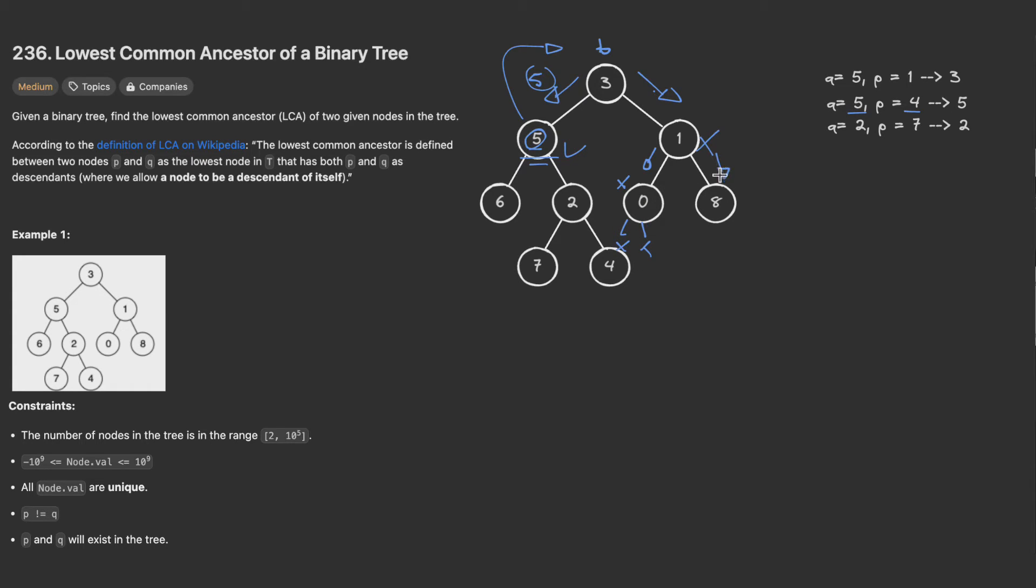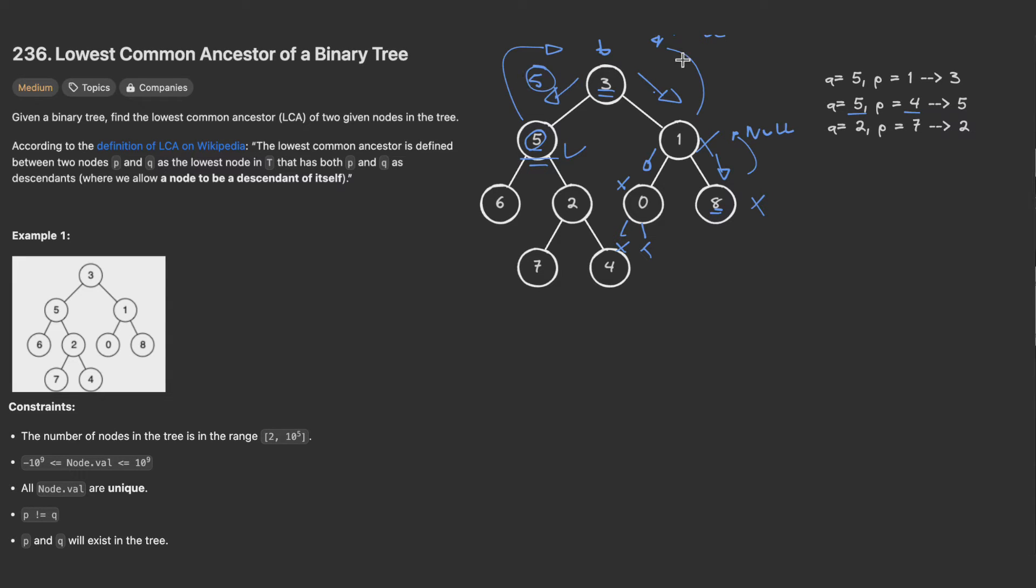Now I will go to the right hand side and check does 8 equal 5 or 4, which is not. So we will return null. I will return null here and here. What did we receive at this level? We received a node with value 5 and a null. In this case we will return the one or the node that has a non-null value. So our LCA or lowest common ancestor will be node 5. This is the second case.